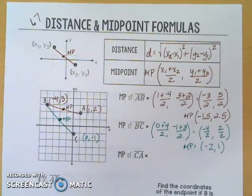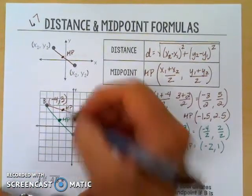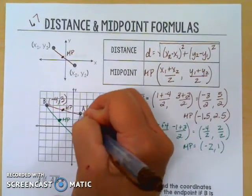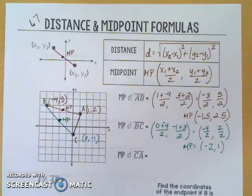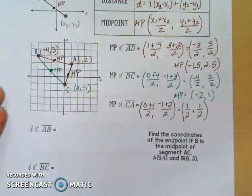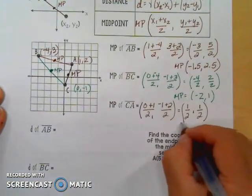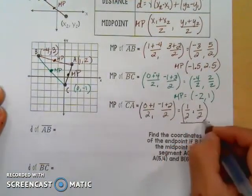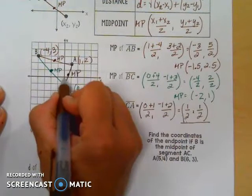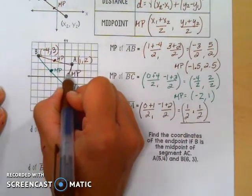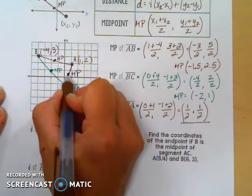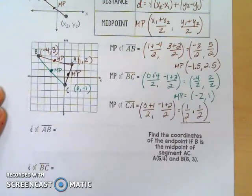Pause the video and see if you can find the midpoint of CA — this segment right here. Hopefully for the midpoint you got positive one half, positive one half. One half, one half puts you right in the middle of that first square, and that's the midpoint.